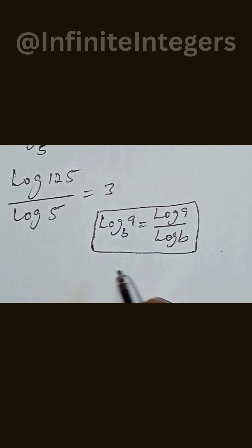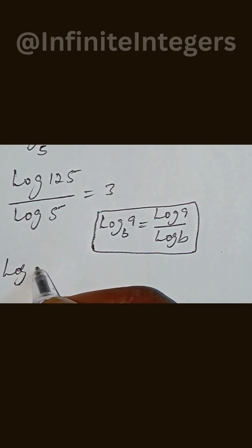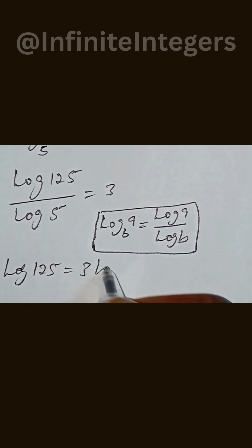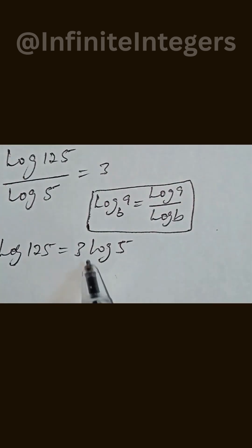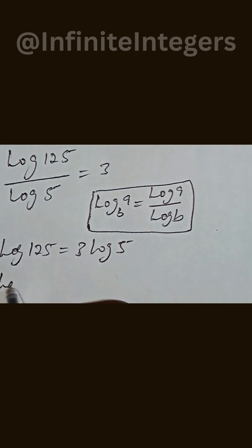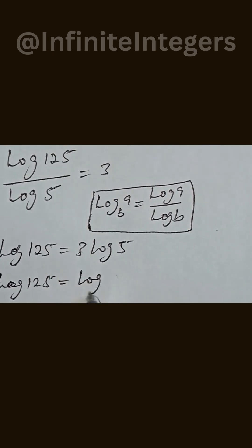So we have log 125 equal to 3 log 5. Now this three will move to the power, so we have log 125 equal to log 5 to the power of 3. This implies...